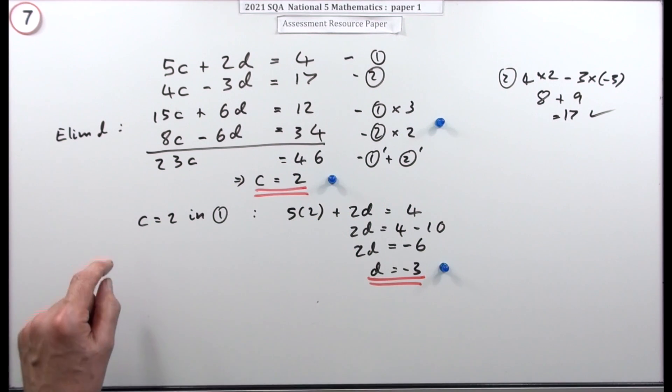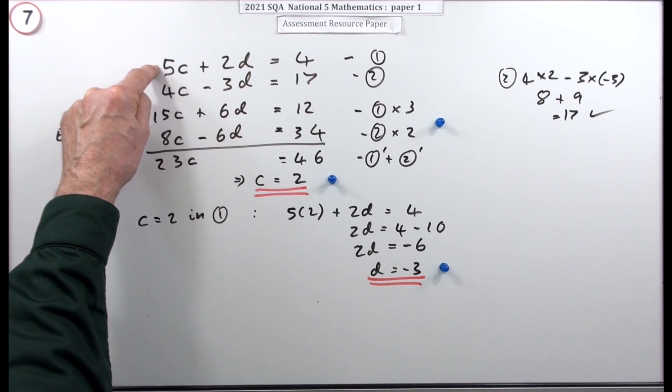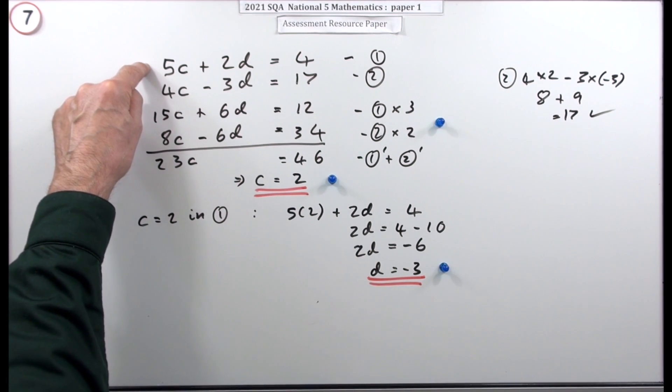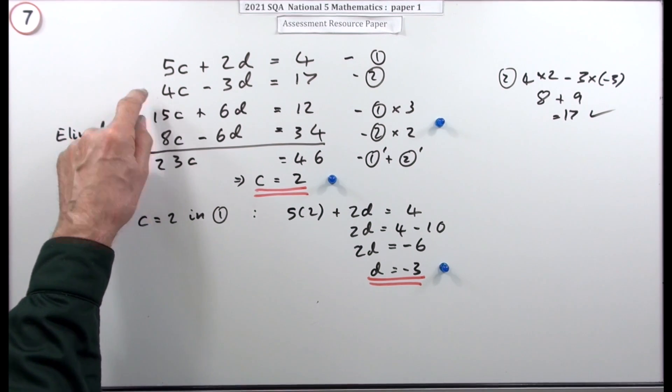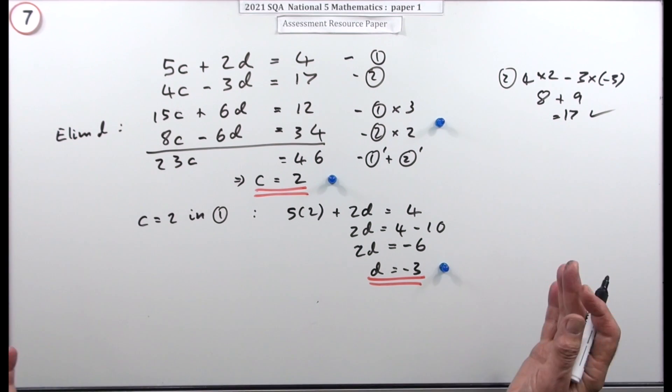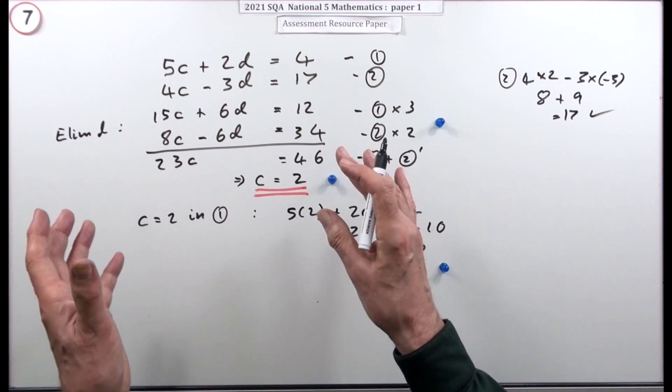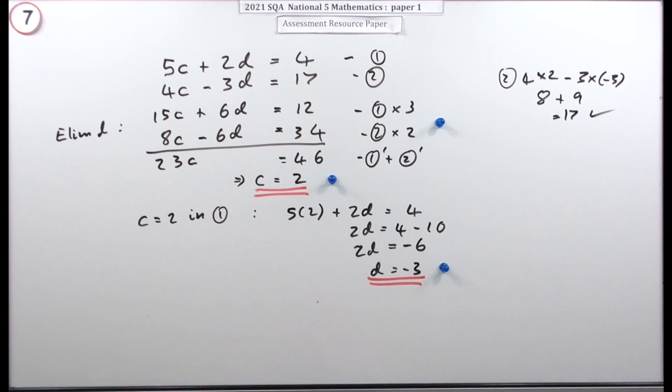Now the alternative would have been to multiply to get rid of the c's, to do four times equation one and then five times equation two. That'd be a lot worse, well it's not much worse, but the arithmetic would just be that little bit bigger, plus you'd have to do a subtraction.